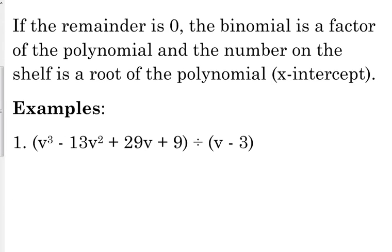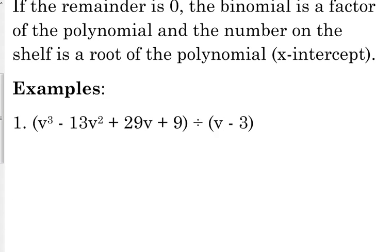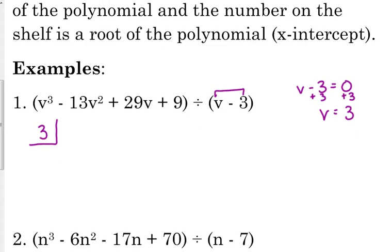So let's look at this first example. v cubed minus 13v squared plus 29v plus 9 divided by v minus 3. So we take our binomial, and I'm kind of going to do this over to the side. This is my binomial, this is the two-term part. I'm going to set that equal to zero and I'm going to solve for my variable. So in this case, I'm going to add 3 to both sides. So that says v equals 3. 3 is going to go on - this is my shelf, it's a backwards L. 3 is going to go on my shelf here, it's backwards L.